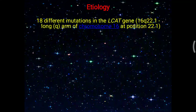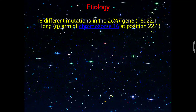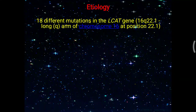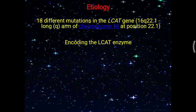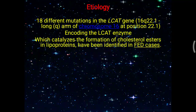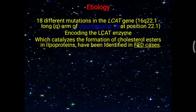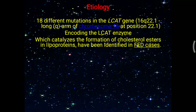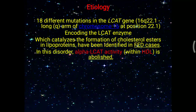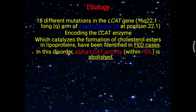Regarding etiology, 18 different mutations in the LCAT gene have been identified. This gene is present on the long Q arm of chromosome 16 at position 22.1. This gene encodes the LCAT enzyme, which catalyzes the formation of cholesterol esters in lipoproteins. The LCAT enzyme has two activity types: alpha activity and beta activity.